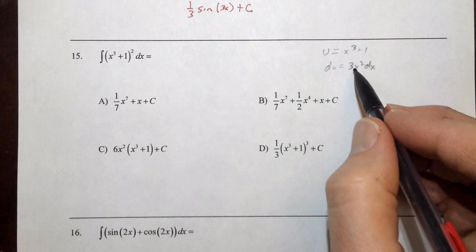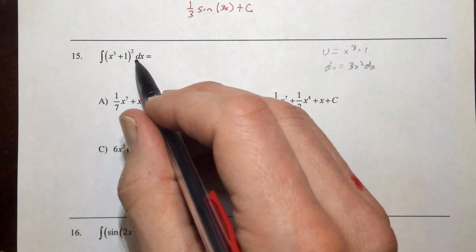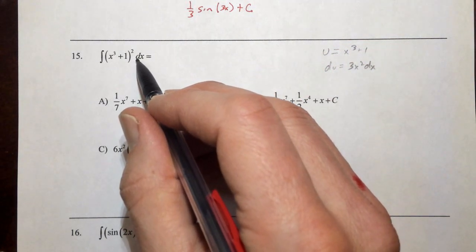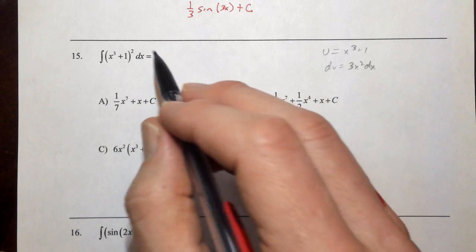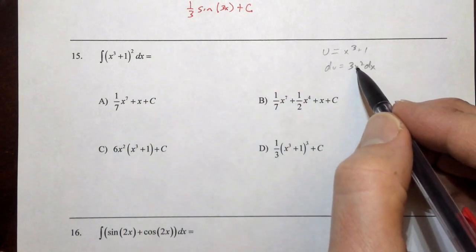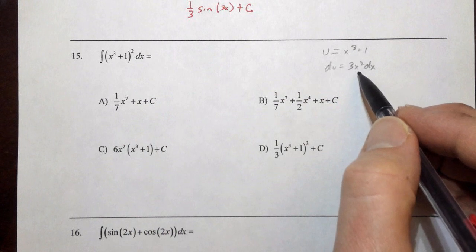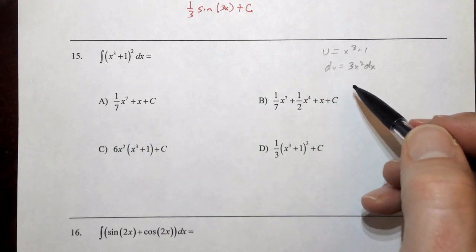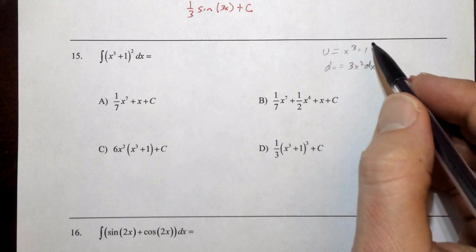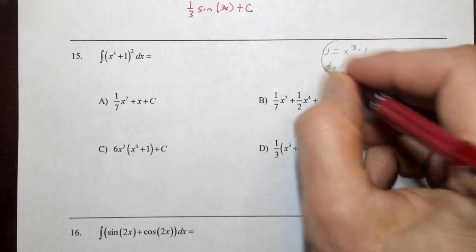That all works out well, except that we don't have the 3x squared. If it was just the 3 that we were missing, like up above, that would be okay. But if we're missing a variable, we cannot throw the variable in there because we're adding solutions to our answer that do not exist. So this cannot be done with u substitution.